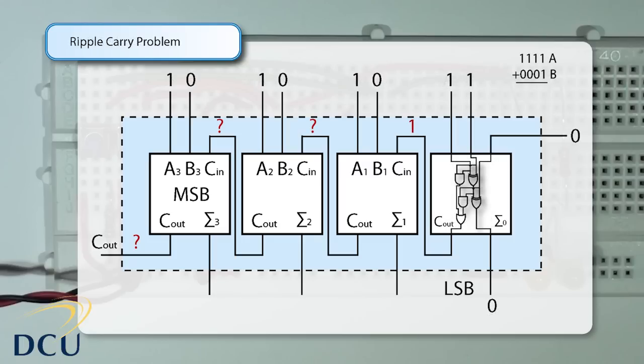The way that we've laid out this circuit is functionally correct, but it suffers from the ripple carry problem. If we examine what happens when we add two numbers together, in this case A is equal to 1111, which is 15 in decimal, and B is equal to 0001, which is 1 in decimal, we can see that the least significant bit on the right hand side full adder must be calculated first before we can calculate the value in the next full adder.